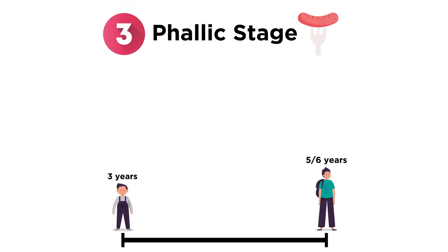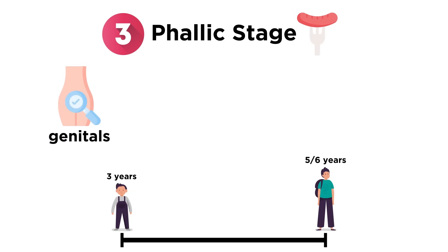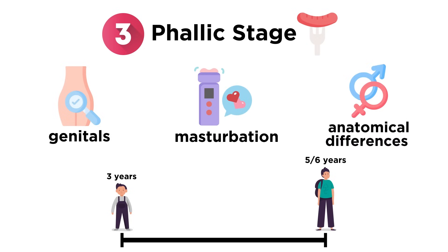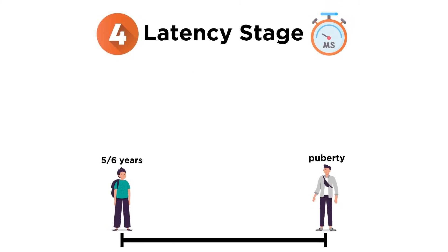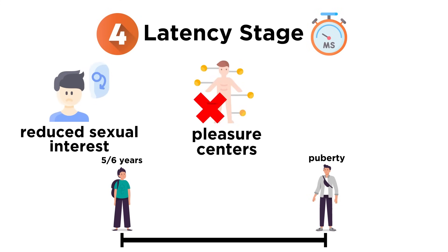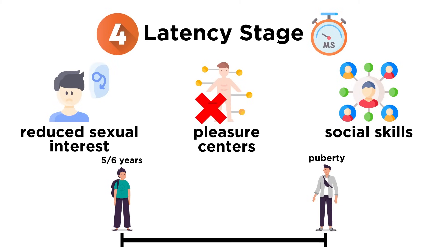Once through the anal stage, one reaches the phallic stage. The pleasure center in the phallic stage is the genitals. According to Freud, this is the stage where children discover masturbation and realize that there are anatomical differences between sexes. Between five or six years old and puberty, Freud believed children were in the latency stage. In this stage, there is a reduced sexual interest and activity, no pleasure centers in the body, and children can develop social skills and find pleasure through interactions with friends and family.